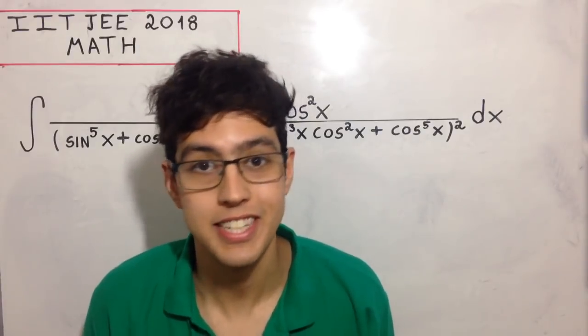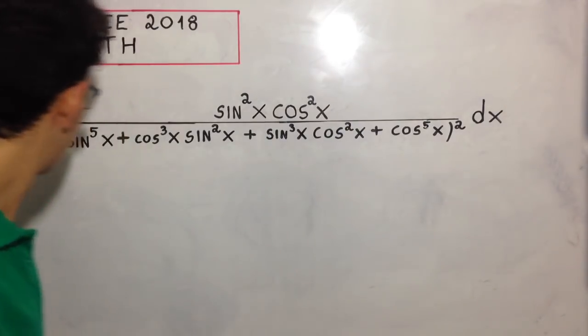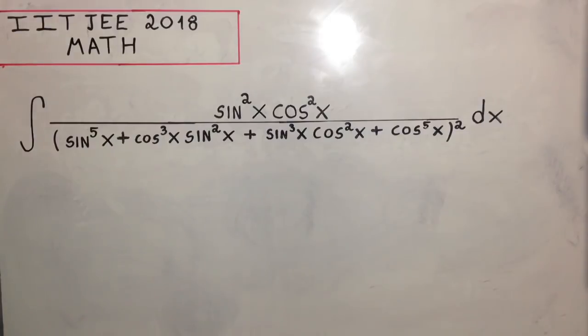Hey guys, let's solve this integration problem: the integral of sin²x cos²x divided by (sin⁵x + cos³x sin²x + sin²x cos³x + cos⁵x) dx. The numerator is simple, but the denominator is not, so we need to figure out a way to simplify it.